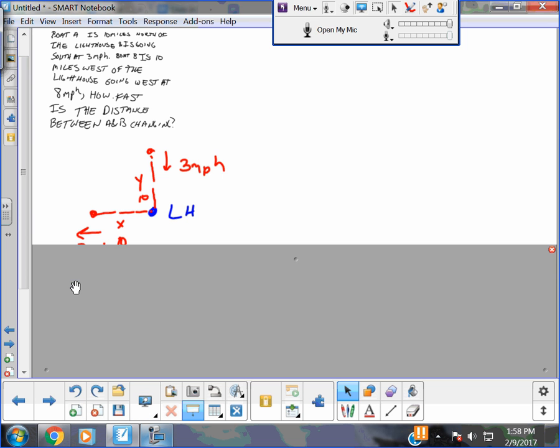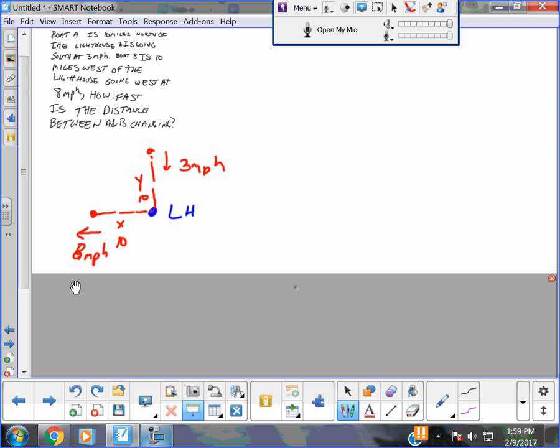Alright, I'm going to make this a little smaller so you can see it. I see a lighthouse here in blue, and I see boat A going south at 3 miles per hour. I'm going to call that Y. And I see boat B over here going west at 8 miles per hour. I'm going to call that horizontal distance X.